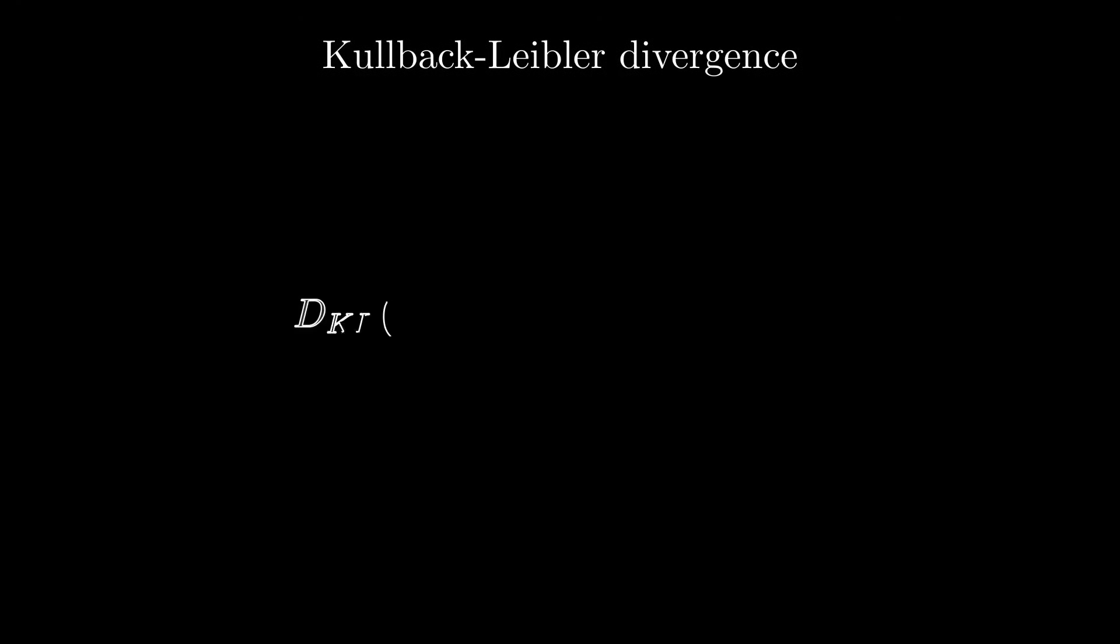The most common way to measure how similar two probability distributions are is by using the Kullback-Leibler divergence. You can think of it as a kind of distance, but between probability distributions. If the KL divergence is large, the distributions are very different, and if it's small, they're very similar.